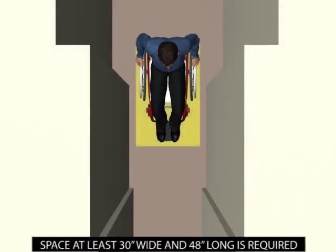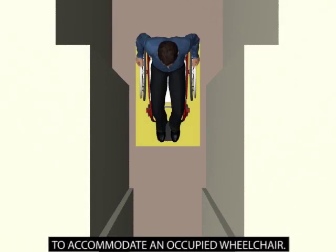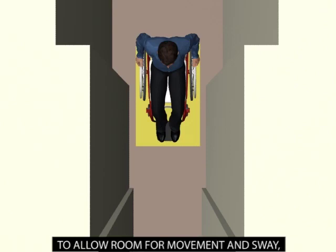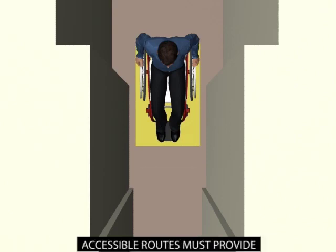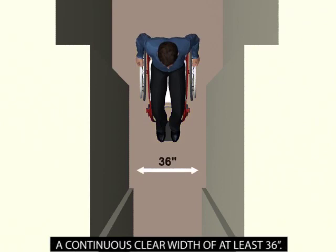Space at least 30 inches wide and 48 inches long is required to accommodate an occupied wheelchair. To allow room for movement and sway, accessible routes must provide a continuous clear width of at least 36 inches.